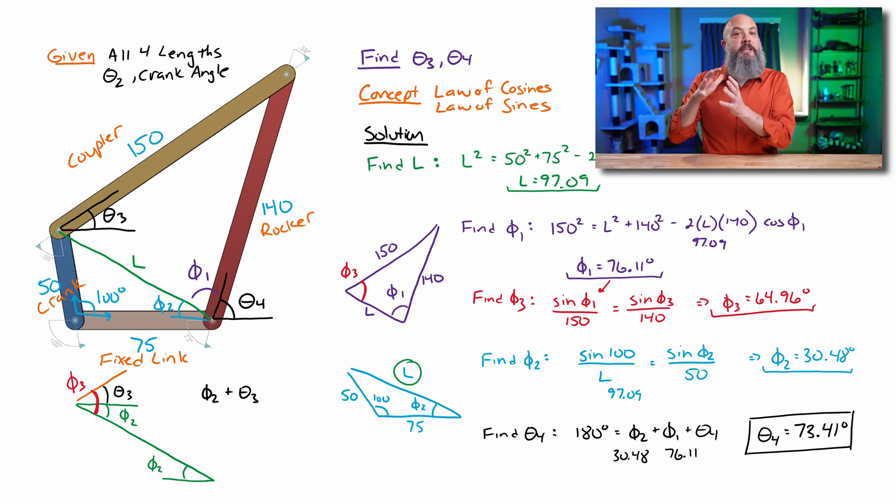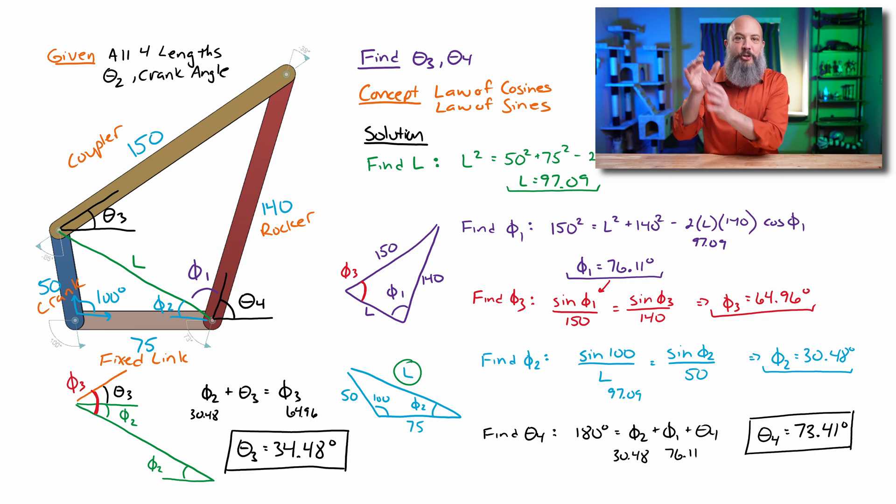And since phi 2, which was 30, plus theta 3, which I'm trying to find, have to add up to phi 3, this 64 degrees, I can just subtract 64 minus the 30 and get theta 3, the final answer I'm looking for, 34.48 degrees.